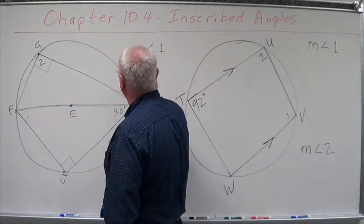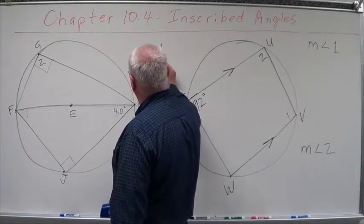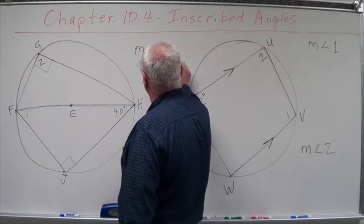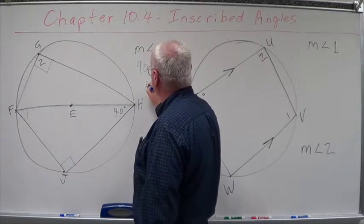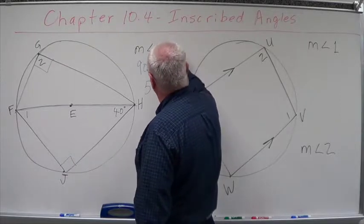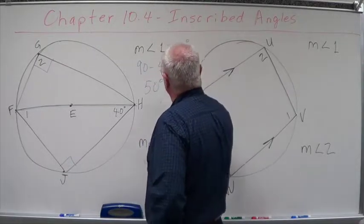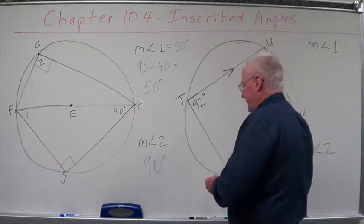We know this one's 40. 90 minus 40 equals, what do you got? 50 degrees. So this equals 50 degrees. Okay, so we're looking at that right there.